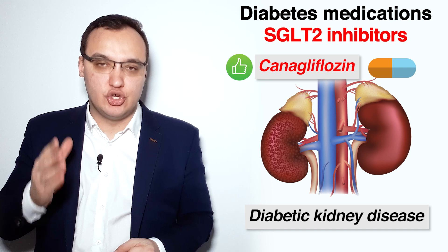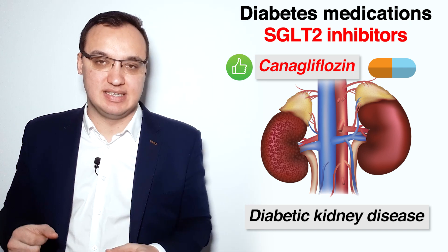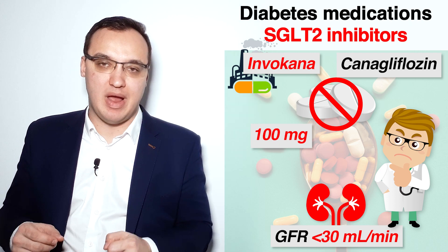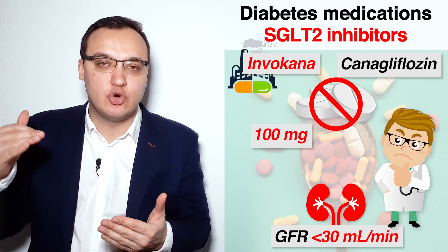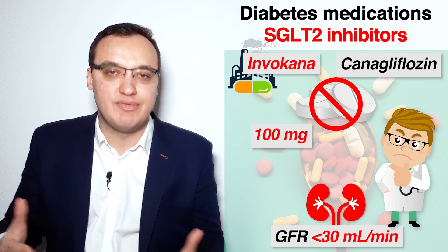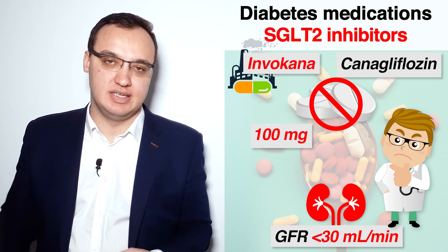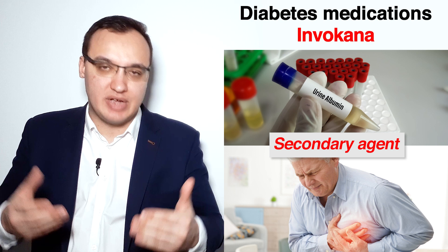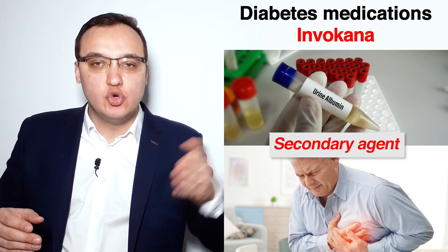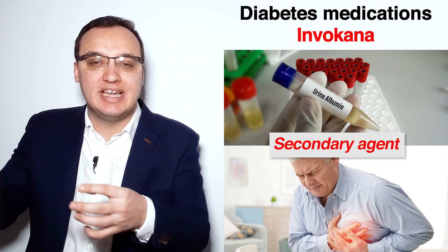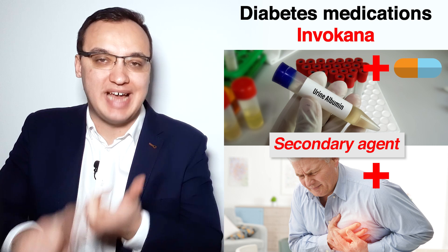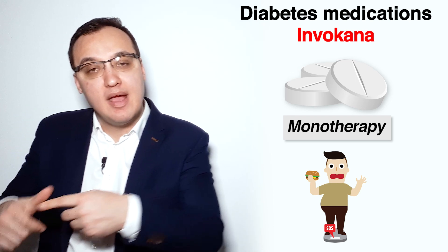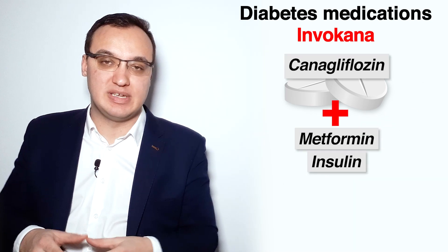Canagliflozin is very good for patients with diabetic kidney disease. However, the dose should not exceed 100 mg once daily in these patients, since a higher dose will not increase the benefits. In both heart failure and diabetic kidney disease, Canagliflozin is used only as a secondary agent, in combination with other medications. For diabetes, Canagliflozin can be used as monotherapy, or combined with Metformin or Insulin.